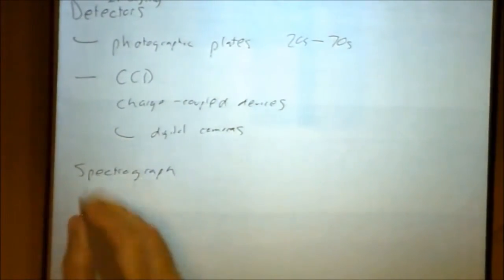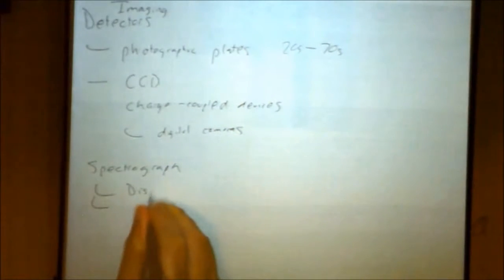A spectrograph is a combination of two elements. You need a disperser, and you need a detector.